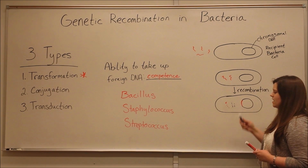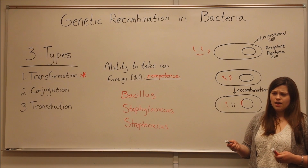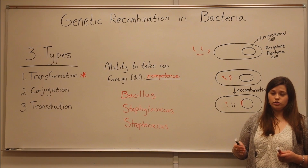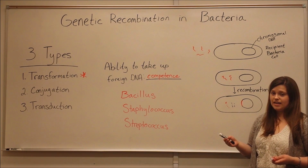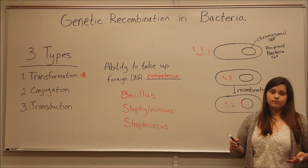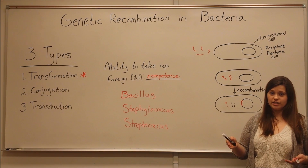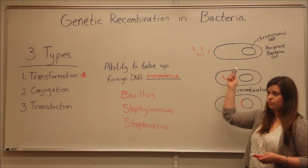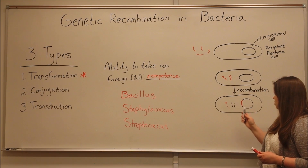This new DNA that is taken up can give the cell different functions. For example, there are species of E. coli that actually produce Shiga toxin. This is a toxin that they obtain from the bacteria type Shigella. So Shigella produces Shiga toxin, but some E. coli cells can produce it too because they're able to go through this genetic recombination process.